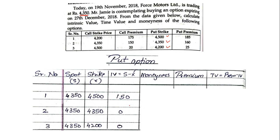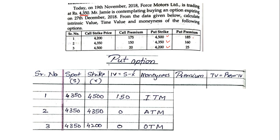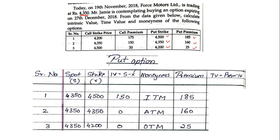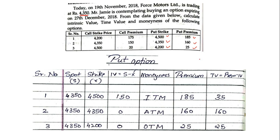For moneyness under put option: the positive one is ITM — In The Money; the equal one is ATM — At The Money; and the negative one is OTM — Out Of The Money. Premiums are given as 185, 160, and 25. Time value: 185 minus 150 equals 35; 160 minus 0 equals 160; and 25 minus 0 equals 25. This is how you solve the sum based on put option, and with this the entire first sum comes to an end.